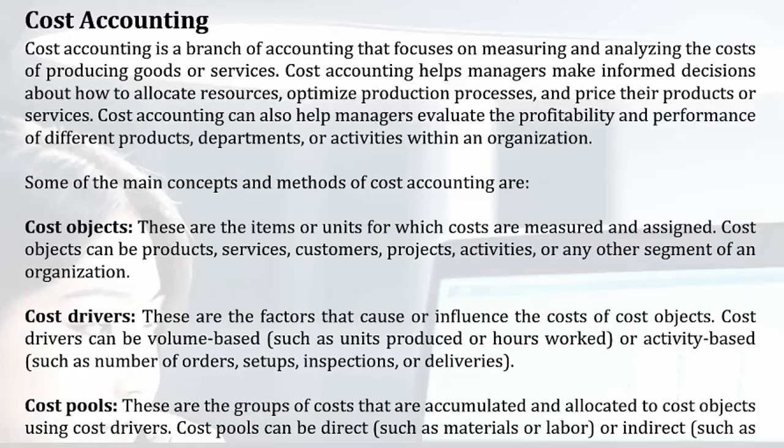Some of the main concepts and methods of Cost Accounting are: Cost Objects — these are the items or units for which costs are measured and assigned. Cost Objects can be products, services, customers, projects, activities, or any other segment of an organization. Cost Drivers — these are the factors that cause or influence the costs of Cost Objects. Cost Drivers can be volume-based, such as units produced or hours worked, or activity-based, such as number of orders, setups, inspections, or deliveries.